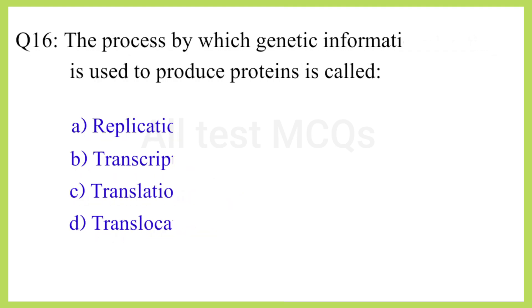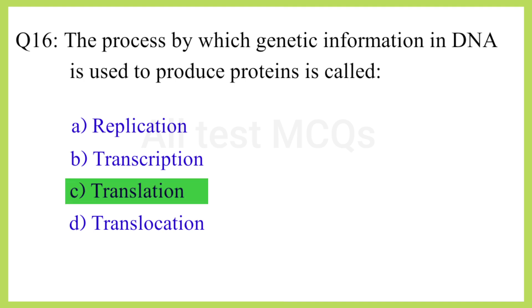Q16. The process by which genetic information in DNA is used to produce protein is called? The correct answer is option C: Translation.